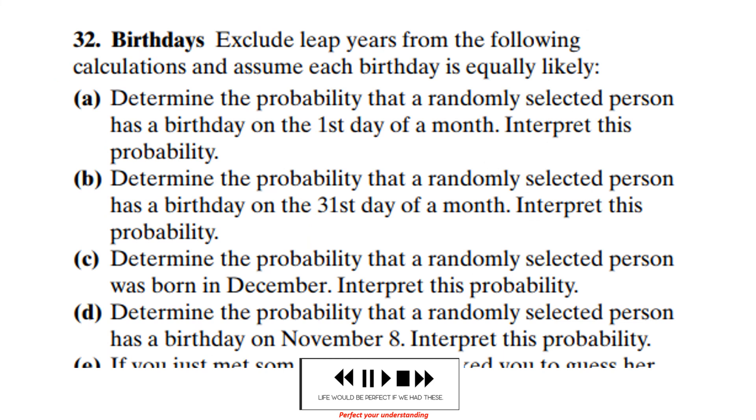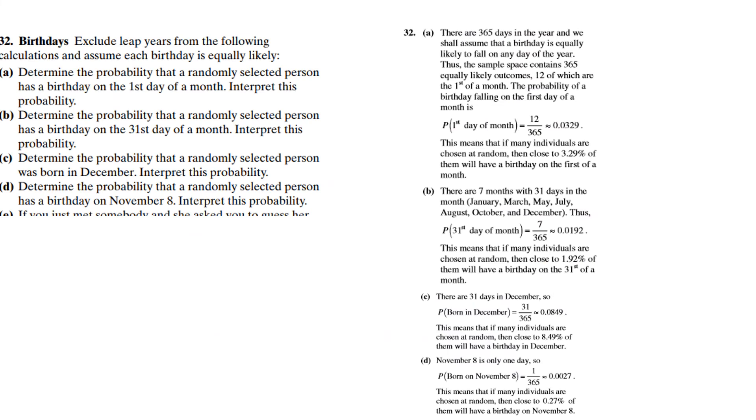Here's another problem. You know what to do and when to do it. Go ahead and read this. Give it a go. Let's see how you did. So the probability your birthday is the first day of the month is 12 out of 365. There are seven months with 31 days, so it's 7 out of 365 because there are seven days that are the 31st. Since there are 31 days in December, it's 31 out of 365. And November is 1 out of 365.